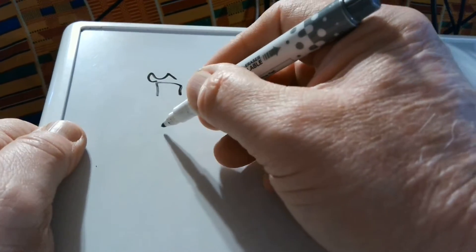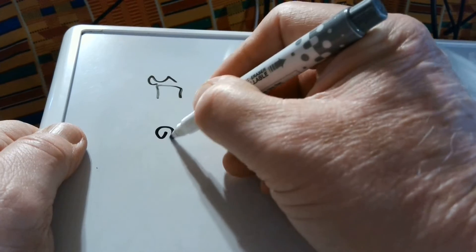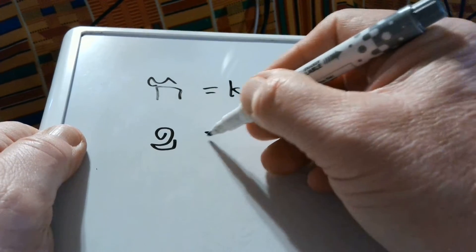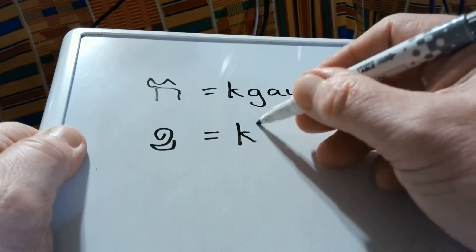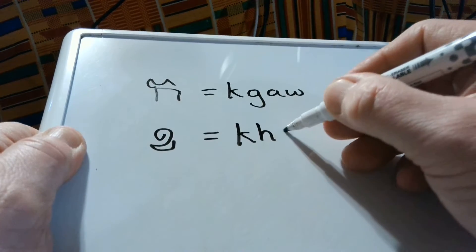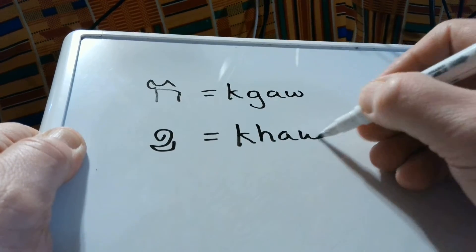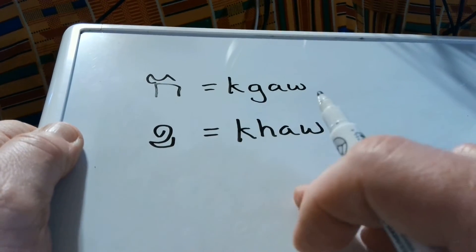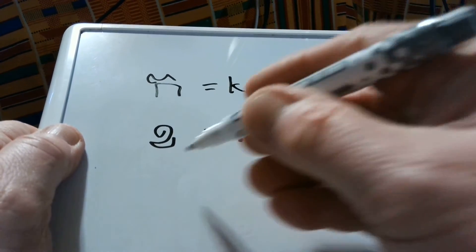The second consonant is KAH. That's a little easier to say. It's K-H-A-W. KAH. Okay, so there's your first two letters.